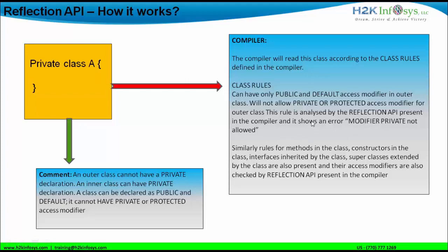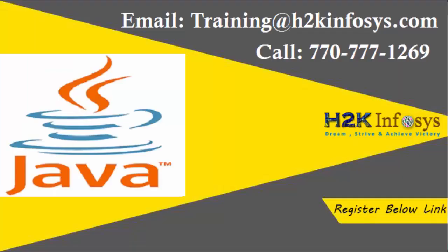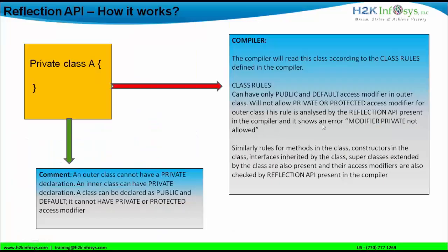Based on the rule defined by Reflection API, the syntax error will be thrown out by the compiler. The compiler knows the rule because it is defined in the Reflection API present inside the compiler. So this rule is analyzed by the Reflection API and it shows an error: 'modifier private not allowed.' Similarly, rules for methods, constructors, interfaces inherited, or super classes extended are also present, and their access modifiers are also checked by the Reflection API present in the compiler.